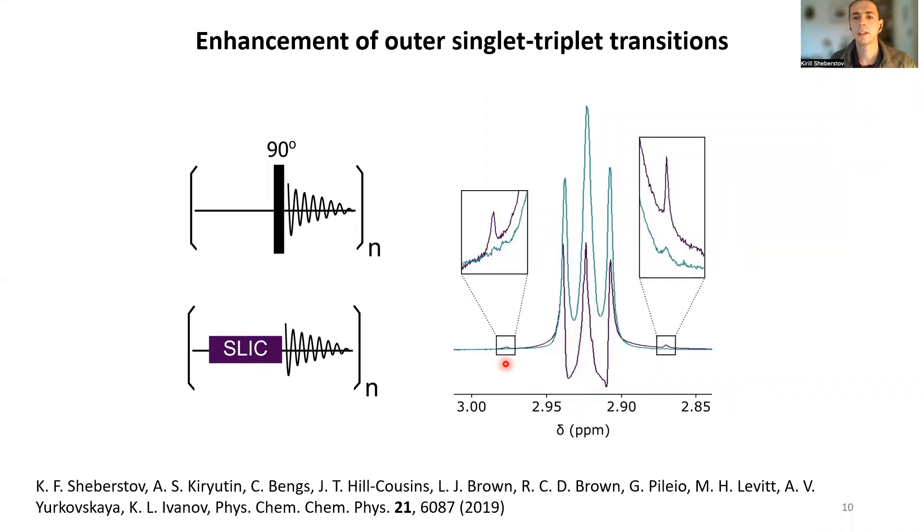Instead of using 90-degree hard pulse excitation, use a SLIC directly applied at the center of the multiplet. It could happen that the outer very weak transitions, which are almost invisible in a normal spectrum—they are called forbidden transitions or combination lines—these lines will be enhanced.